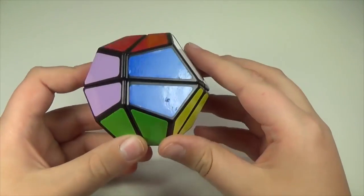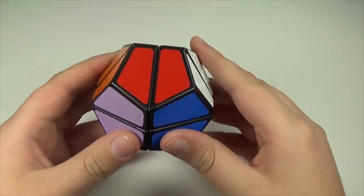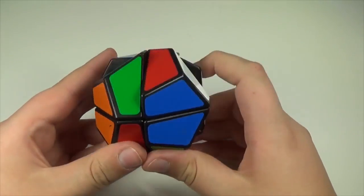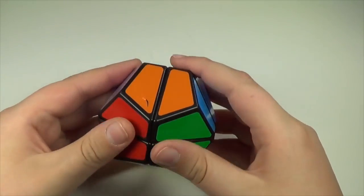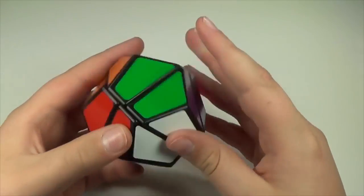Next, we have the 2x2 shape-shifting dodecahedron. I think the name kind of tells you what that is. It's basically just a shape-shifting 2x2 dodecahedron. The core is a Lan Lan, and it's pretty smooth.